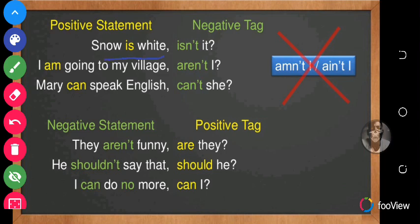For example, the positive statement 'Snow is white' will use the negative tag 'isn't it?' What makes this statement positive is that there is no negative word. An example of a negative word is 'not.' What makes this question tag negative is that it has a negative word in it, which is 'not.' Other examples of a positive statement and a negative tag: 'I am going to my village, aren't I?' and 'Mary can speak English, can't she?'